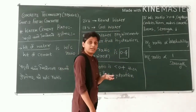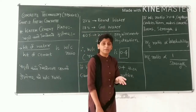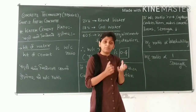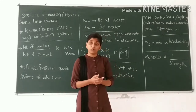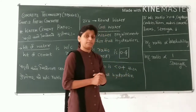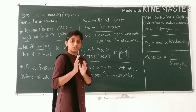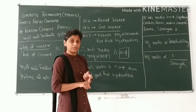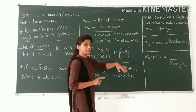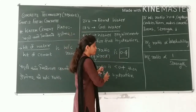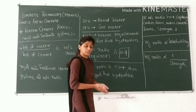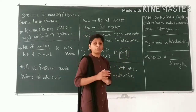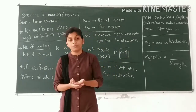If we add more water than the 40% required — that is, if the water-cement ratio exceeds 0.4 — the excess water will form capillaries and pores in the concrete, making it porous and reducing its strength. The relationship between water-cement ratio and strength is thus important.